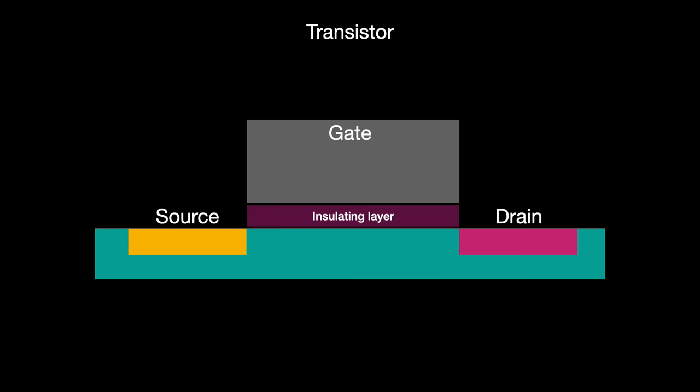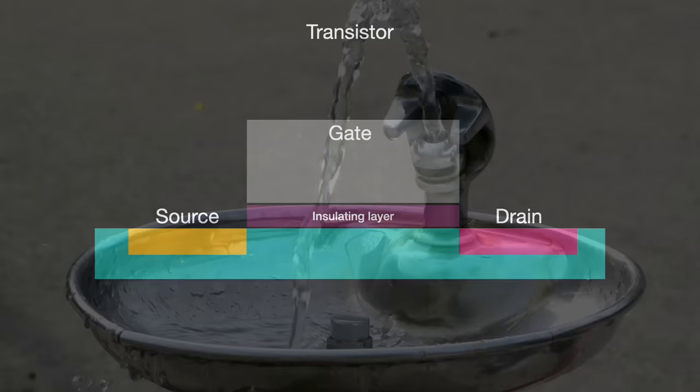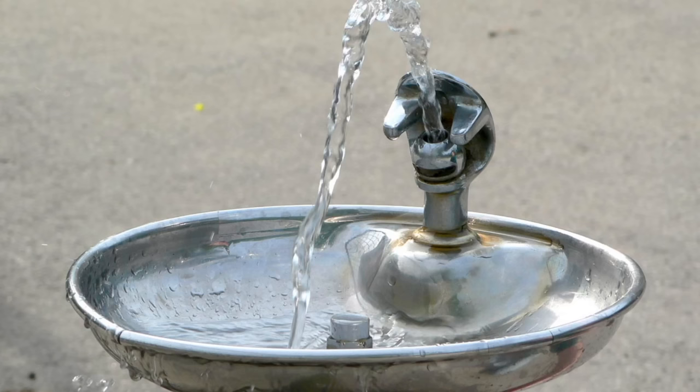We should begin with some basics. An integrated circuit, or IC, is a collection of devices. Some of these devices can be active — the most familiar of which is the transistor, which can control the flow of electrons from a source to a drain using a gate and a voltage. A transistor is like a water fountain: water goes from its source to its drain, and that flow is controlled by a gate. You can actively open or shut that gate using some energy, same as with a transistor.